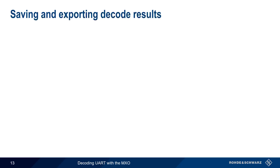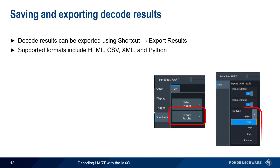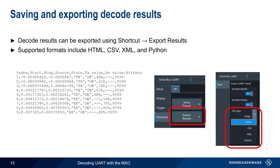Decoded results can be exported by choosing 'Export Results' from the Shortcuts menu. The supported export formats include HTML, CSV, XML, and Python. The CSV example shown here includes the type of data in the export: timing information as well as the decoded values for each individual frame.